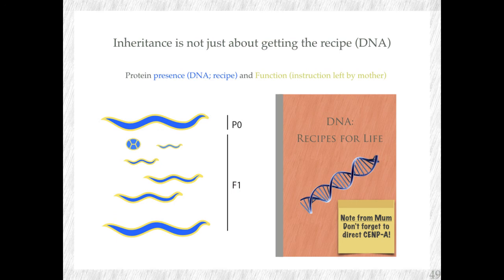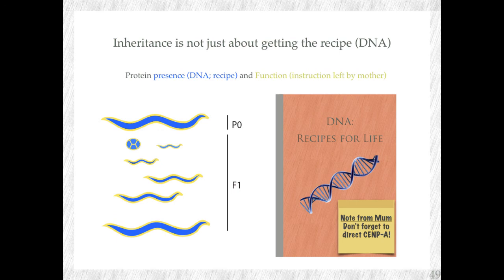To end with, I like to think of something a bit more conceptual. What I've shown you is a form of inheritance that is just really interesting. It's not only about getting the book — not only about getting the DNA from your parents. It's more than that. It's things that are, you could say, on top of the book. In biology, we have a very fancy name for that: we call it epigenetics. Here we provide an interesting example. I want to leave you with this image: it's the book you get from your parents, but it's also these little post-it cards — in this case from the mother — telling you how to direct Sempe and how to set up your centromeres properly.